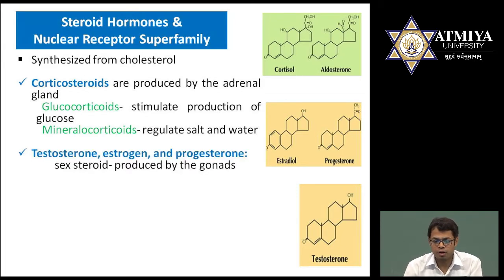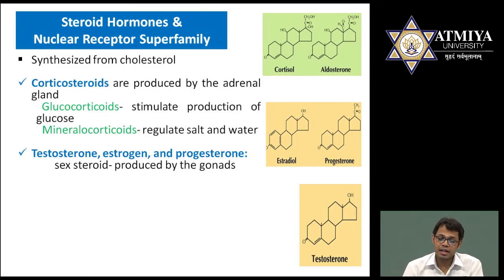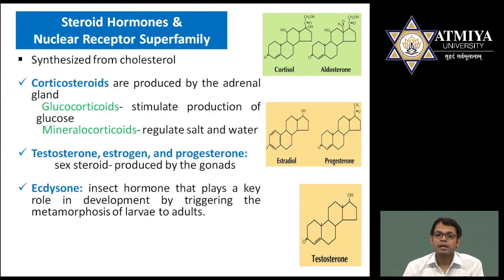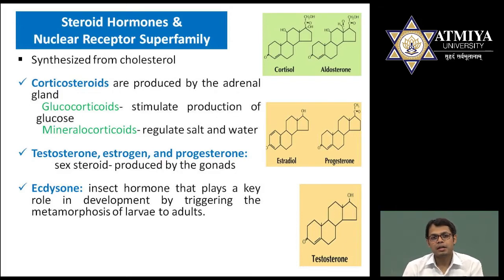The second category of steroid hormones is testosterone, estrogen, and progesterone — the famous sex steroids produced by the gonads. Testosterone is the male androgen hormone, while estrogen and progesterone are female sex steroids. The third is ecdysone, present in insects — it is an insect hormone that plays an important role in development by triggering the metamorphosis of larvae to adult stage.